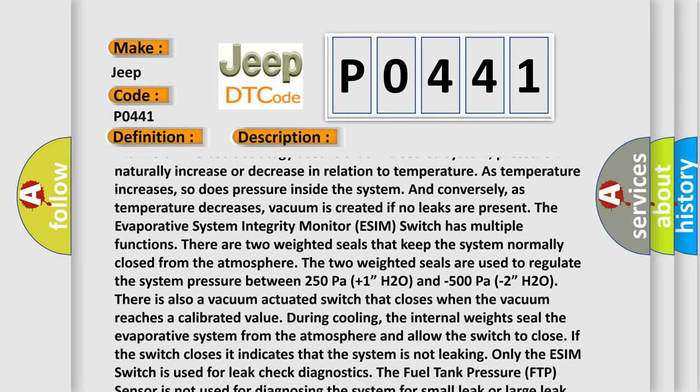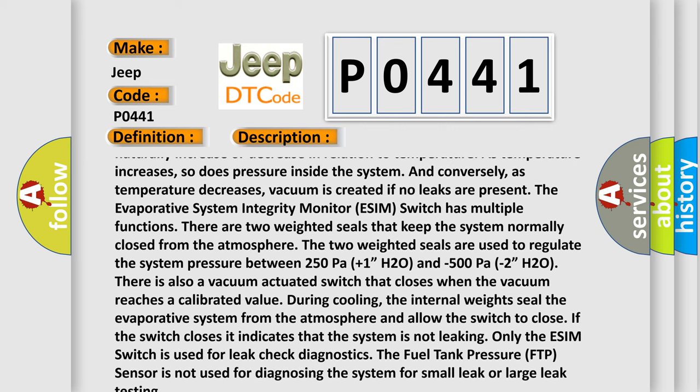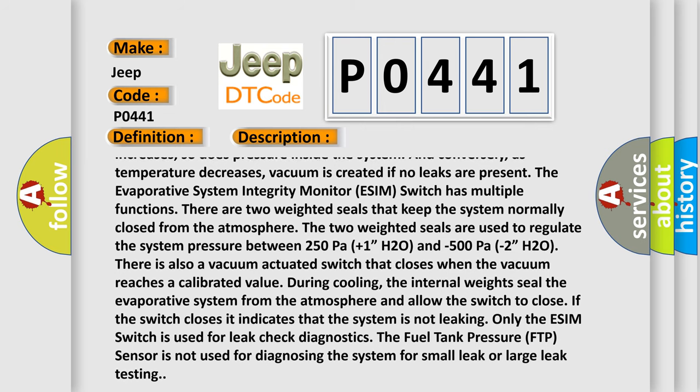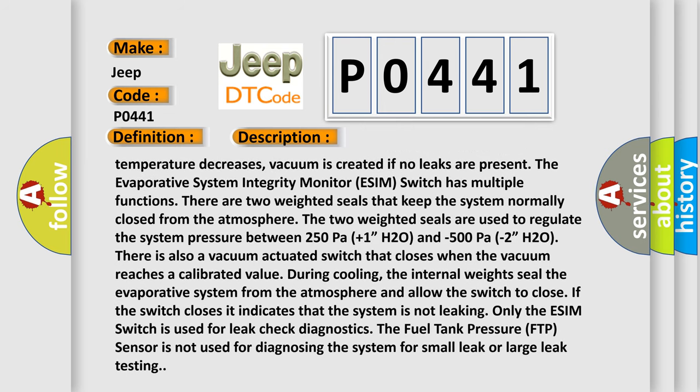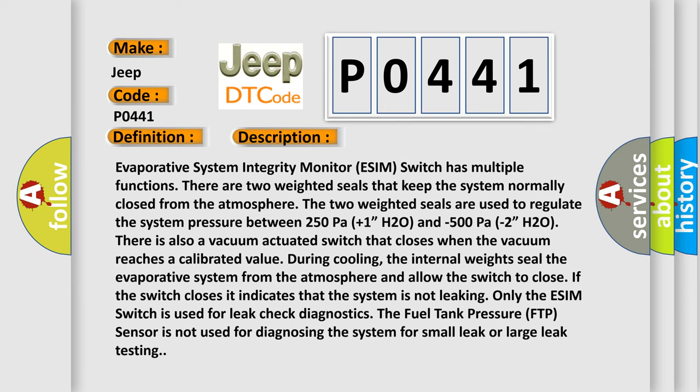The evaporative system integrity monitor (ESIM) switch has multiple functions. There are two weighted seals that keep the system normally closed from the atmosphere. The two weighted seals are used to regulate the system pressure between 250 Pascals (+1" H2O) and -500 Pascals (-2" H2O).